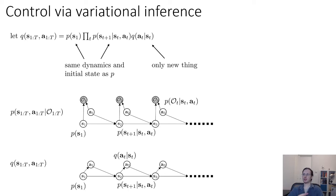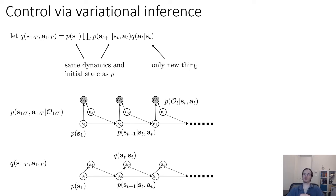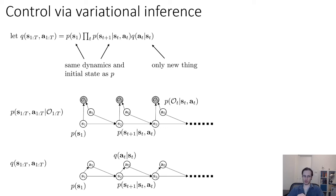As an aside, all of these derivations are presented for the case where S_1 is unobserved. Often you might actually know S_1, in which case P(S_1) goes away, S_1 will be shaded everywhere, and it won't be part of the variational distribution. It's straightforward to derive that — it just adds notation clutter — but if you know the current state and want to figure out future states and actions, S_1 will be observed. I'd encourage you to extend this as an exercise.